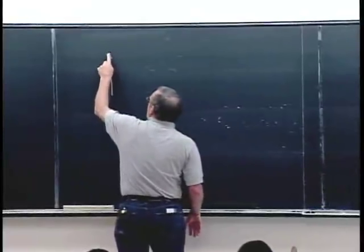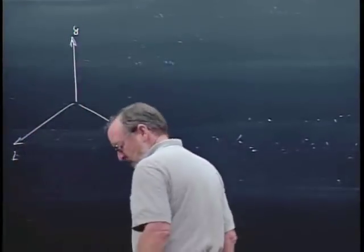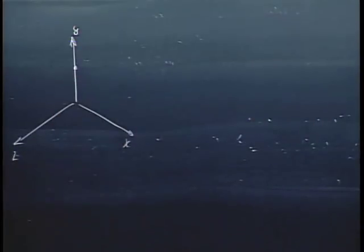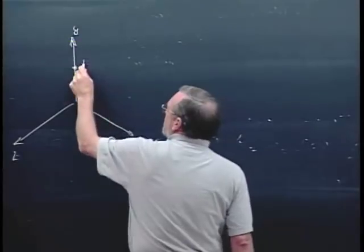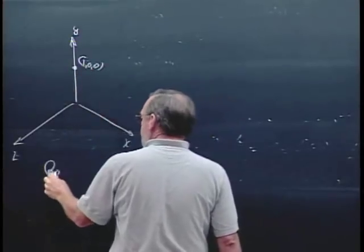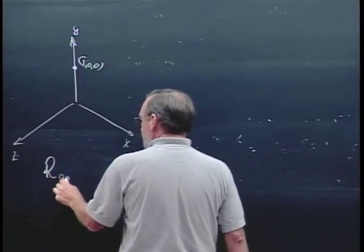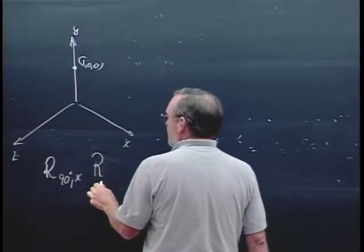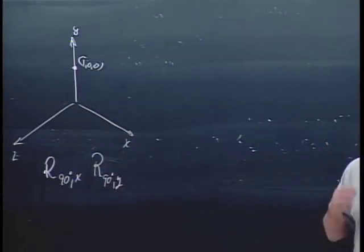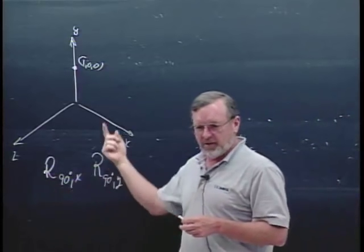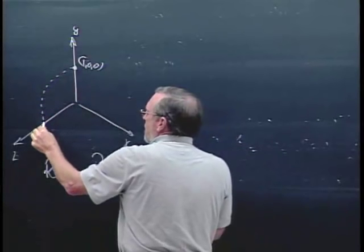Many of you may have noticed that rotations are kind of interesting things. Here's x, y, z. Let's take the point 1, 0, 0 and rotate it — 90 degrees about the x-axis, and then rotate that 90 degrees about the y-axis. If you rotate it first 90 degrees around the x-axis, it drops down, and then if you rotate it 90 degrees around the y-axis, it goes over here.